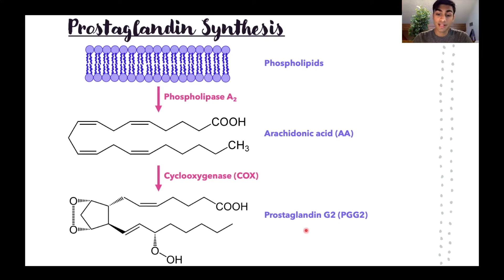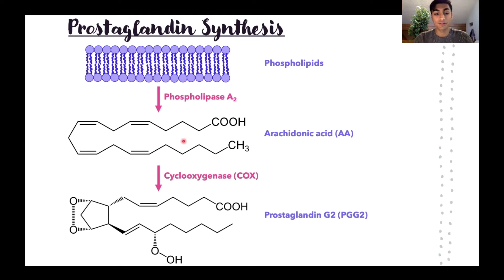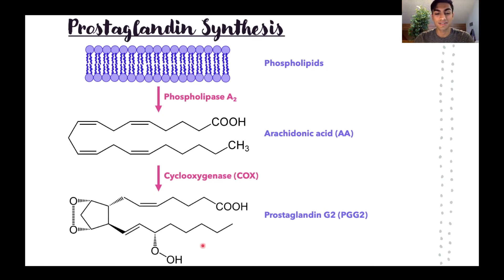Once you produce this first prostaglandin, it will be further modified into a panoply of different prostaglandins — the first step being adding a hydroxyl group to a specific carbon. We can produce a variety of different ones from the starting PGG2. Looking at the structure of arachidonic acid, we can think of it as an eyeball-less fish head with two tails. Once the enzyme COX acts on it, it adds two oxygen atoms — the two eyeballs — producing our lovely fish with eyes, which is our first prostaglandin, PGG2.